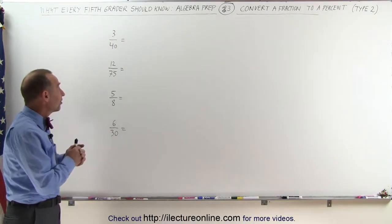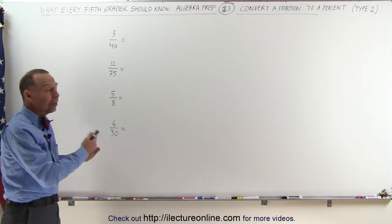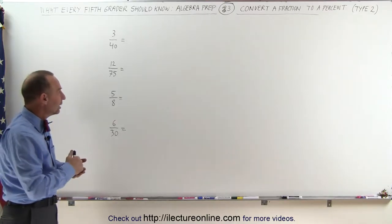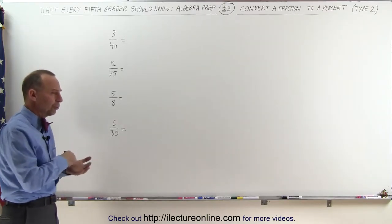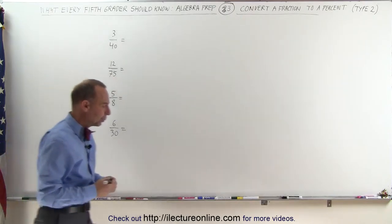The thing to do here is simply divide the numerator by the denominator and turn the fraction into a decimal first, and then once you have a decimal you can easily turn it into a percent. So let's go ahead and try that with our first example.